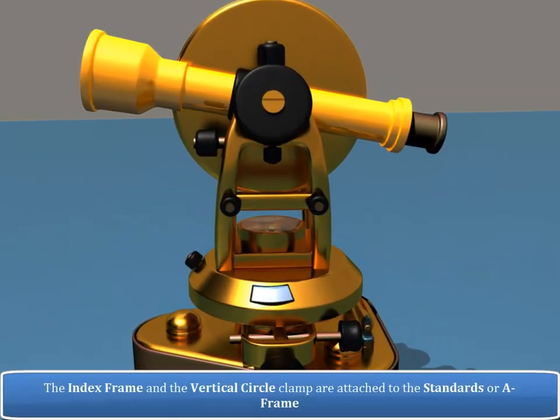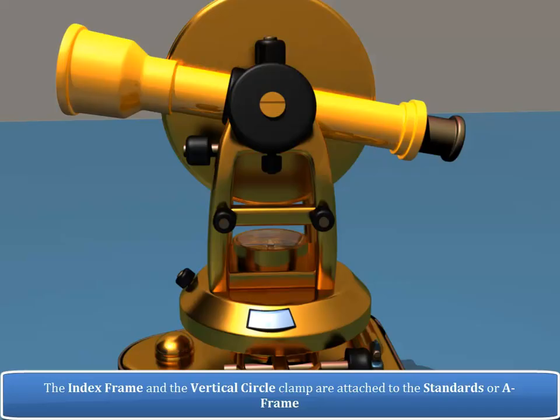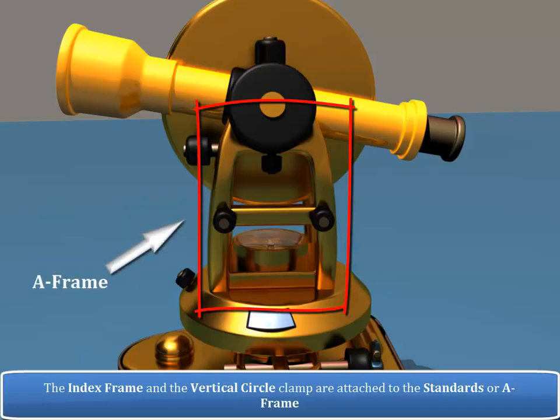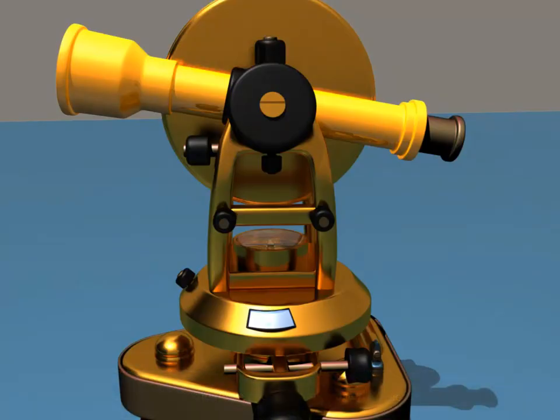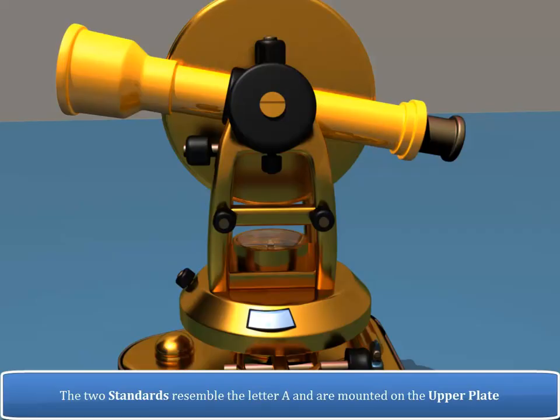The index frame and the vertical circle clamp are attached to the standards or A-frame. Trunnion axis of the telescope is also supported on the A-frame. The two standards resemble the letter A and are mounted on the upper plate.